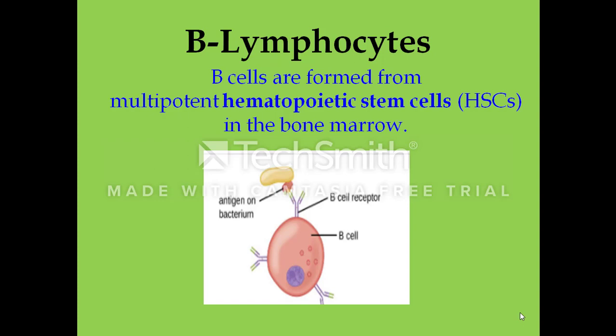Unlike T lymphocytes, the lymphoblasts destined to become B cells do not leave the bone marrow. T lymphocytes leave the bone marrow and mature in the thymus — hence they are called T lymphocytes. But B lymphocytes do not travel to the thymus for maturation; rather, these functional B cells continue to mature in the bone marrow.